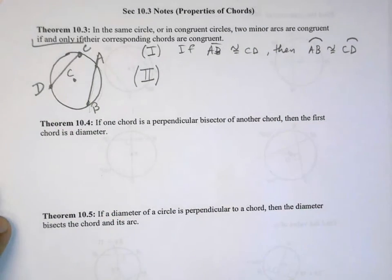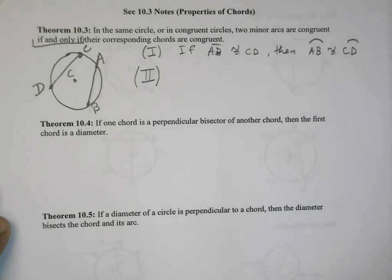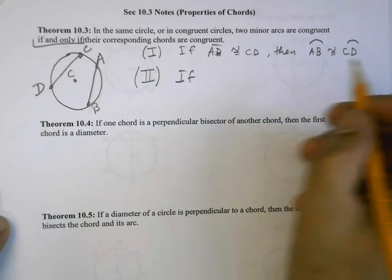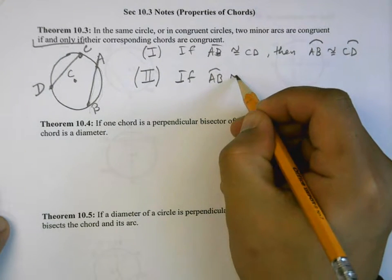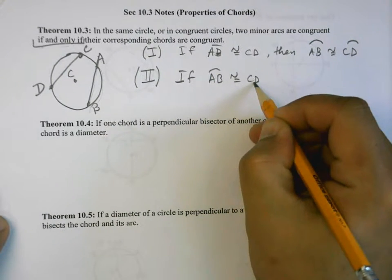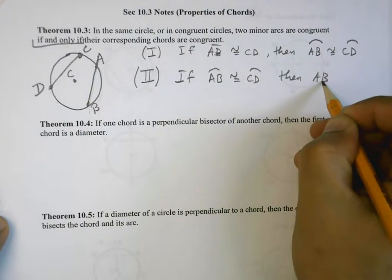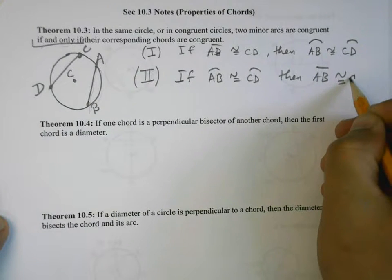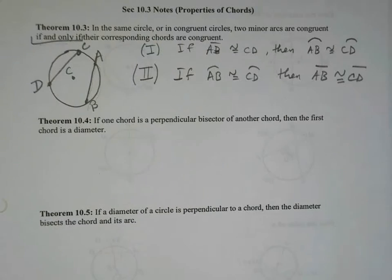Before we get to the proof, there's a second part because this is an 'if and only if' statement. The second part is the converse: if the arcs are congruent, then the segments have to be congruent too. So if the arcs are congruent, then the chord segments must be congruent as well.